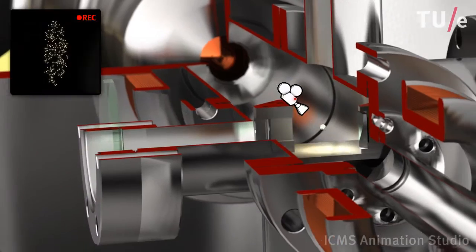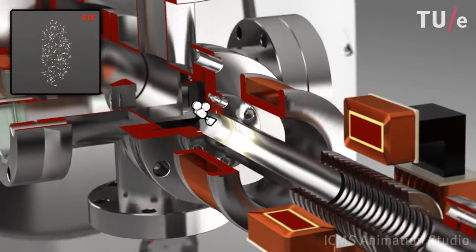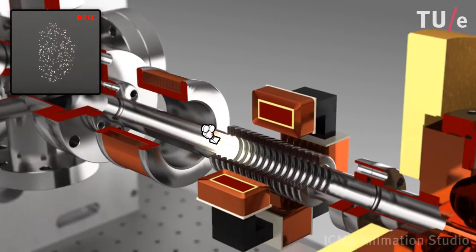The expanding bunch is kept together transversely by standard magnetic lenses. This magnetic focusing also causes the bunch to rotate.